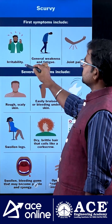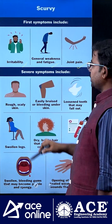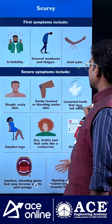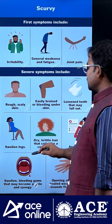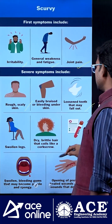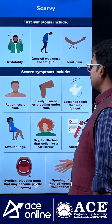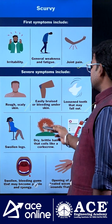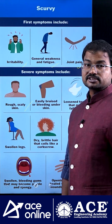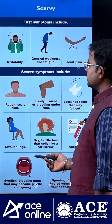The symptoms of scurvy include irritability, general weakness and fatigue, joint pains, rough skin, loosened teeth, swelling of legs, anemia, and dry brittle hair with a coil-like orientation. These are all considered symptoms of scurvy.